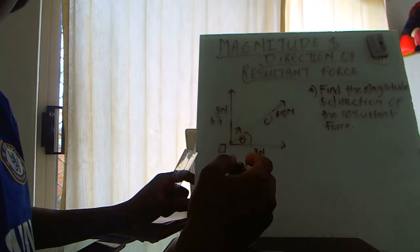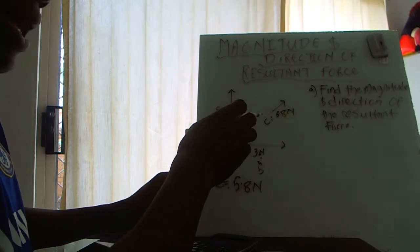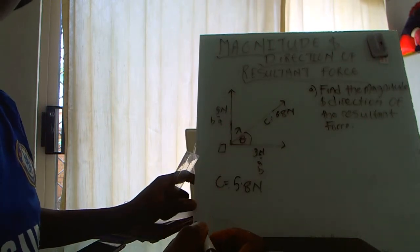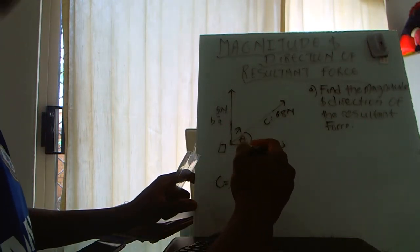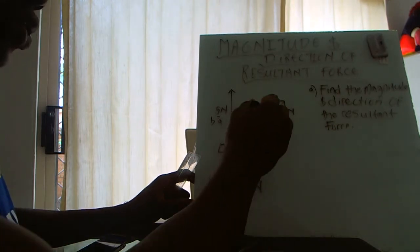Looking at theta, what do we have? What are we given? We have the adjacent which is 3 and we have the hypotenuse which is 5.8.